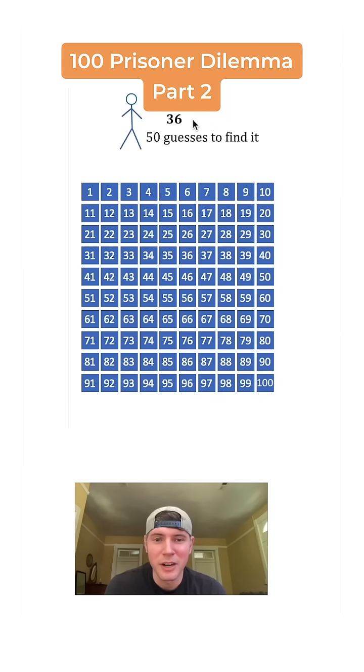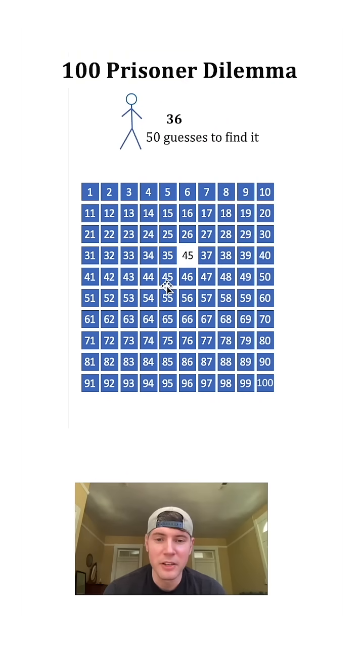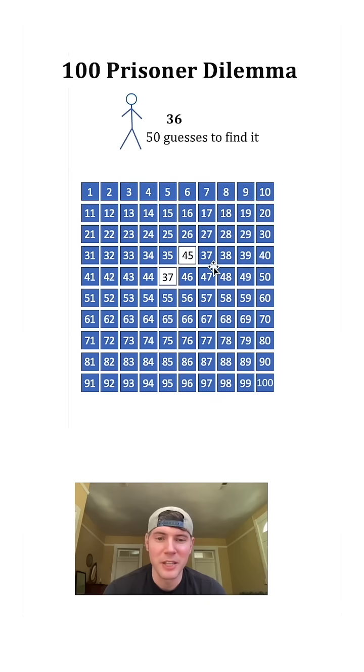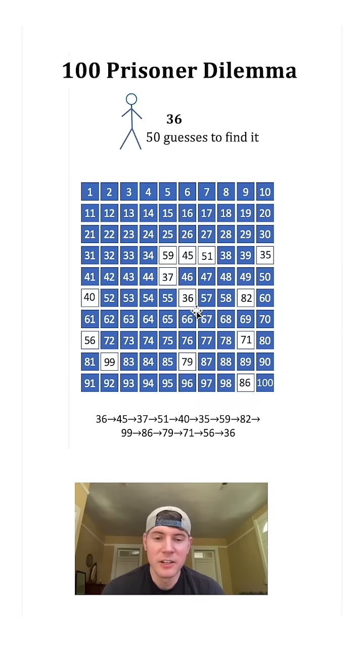So he's number 36. He has 50 guesses to find his box. So he'll find his number 36 and open the box, and he'll go to 45 and open that box, and he'll go to 37 and open that box, and then 51 to that box, 40 opens that box. This says go to 35, 59, 82. This says open 99. 99 says 86, 86 says 79, 79 goes to 71, 71 goes to 56, and 56 says 36. So we found it. And here's the loop that it took right here - it was a 14-step loop.